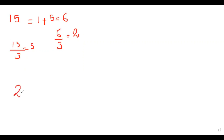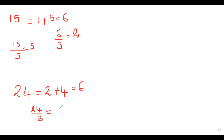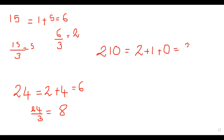Another example: 24. The Digital Root is 2 plus 4, which is 6. Since 6 is divisible by 3, 24 is also divisible by 3. Another example: 210. The Digital Root is 2 plus 1 plus 0, that is 3. Since 3 is divisible by 3, 210 is also divisible by 3.